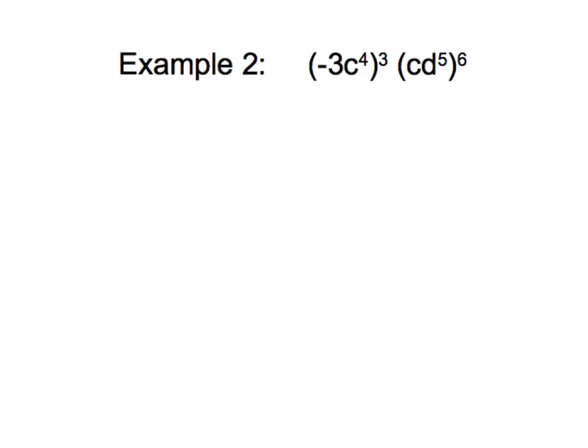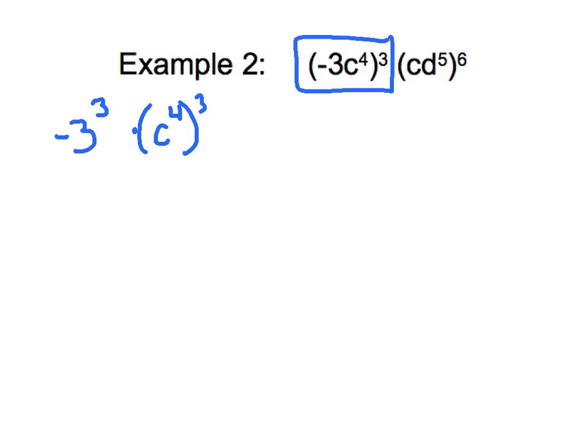Let's go ahead and do example 2 — please write this example in your notes. I'm going to break this problem down into two parts. Can you guess which rule we're going to apply first? That's the power to a power — we can recognize that because we've got that exponent of 3 on the outside of a parenthesis. That means we're going to apply that 3rd power to each and every term inside the parenthesis: negative 3 to the 3rd power times c to the 4th to the 3rd power.